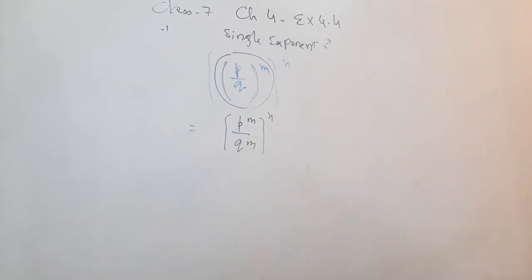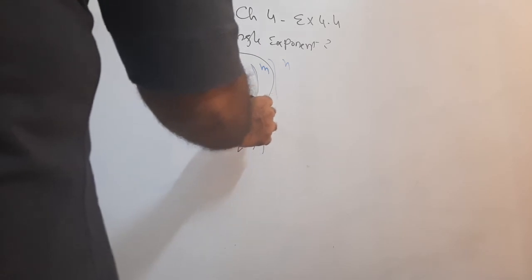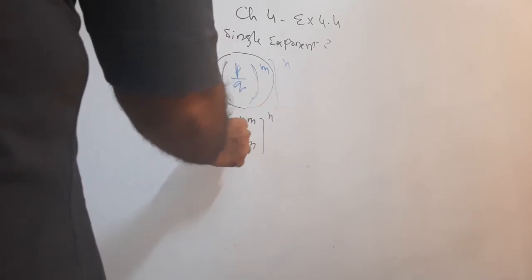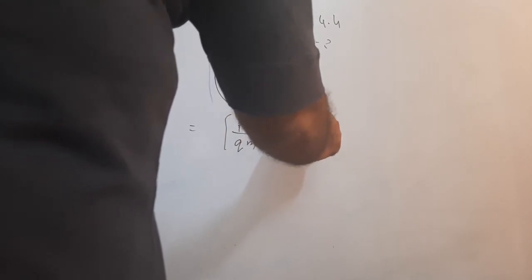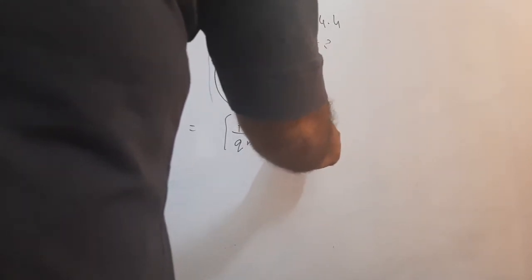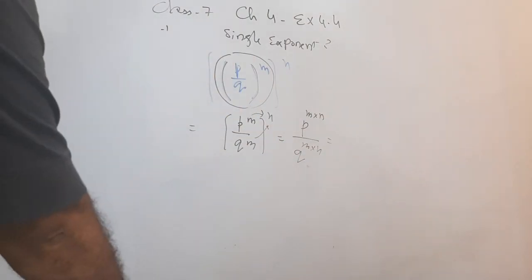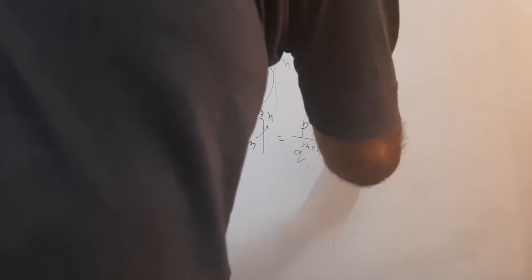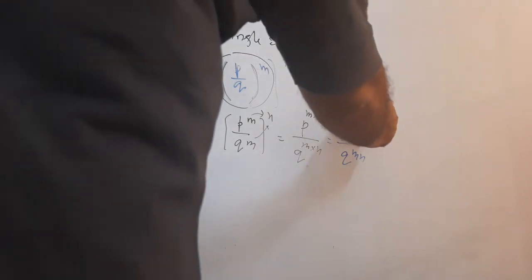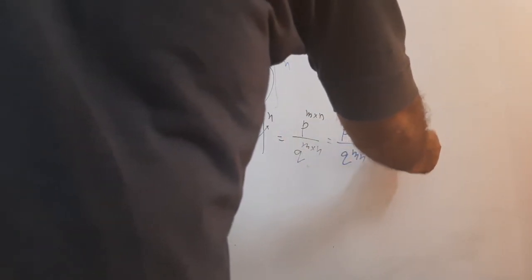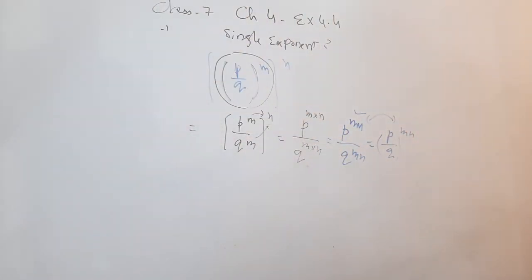The second step: now the power is m times n. So we have p raised to power mn over q raised to power mn. We can simplify this as p over q raised to power mn. This is the answer for this part.